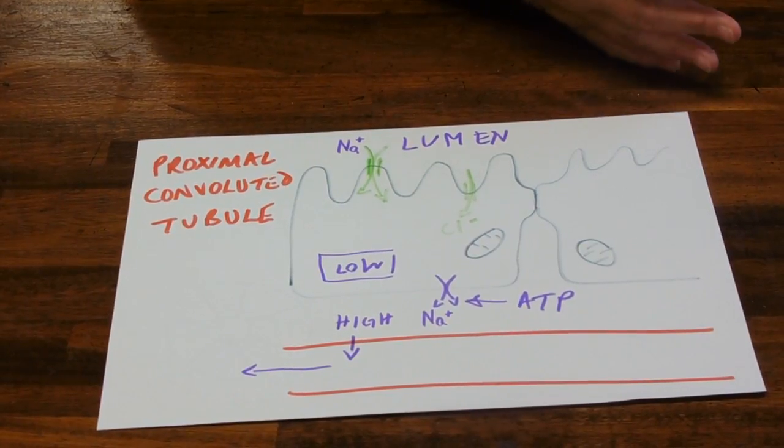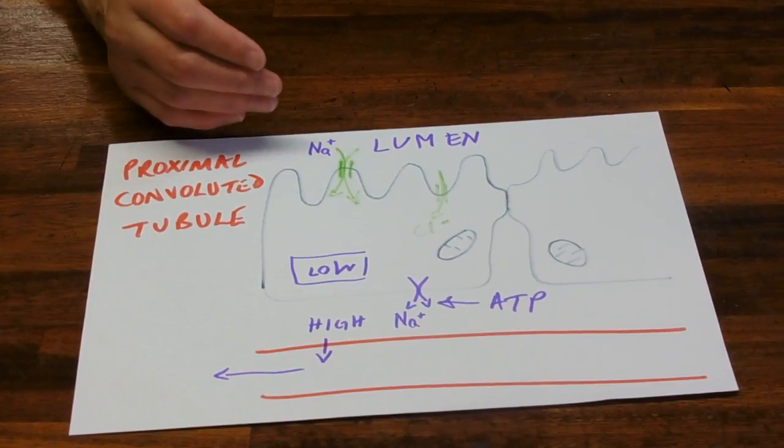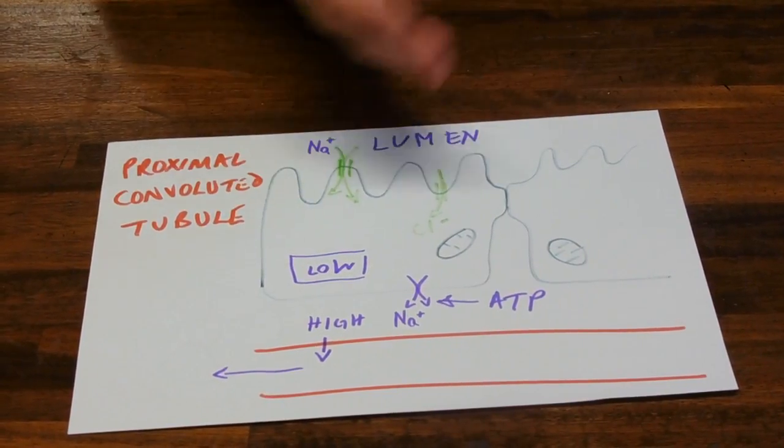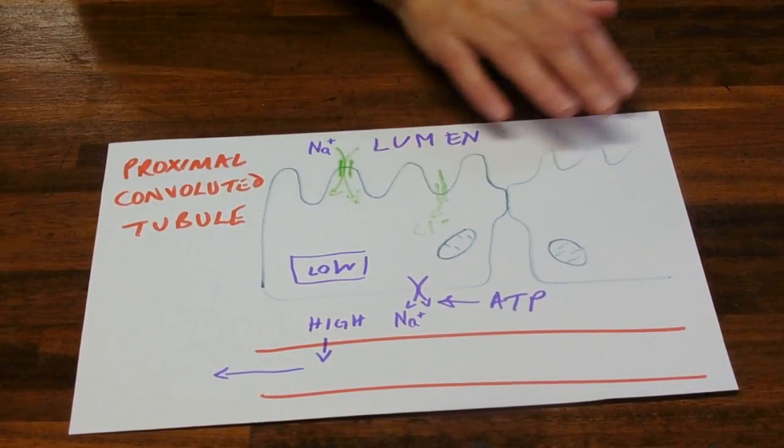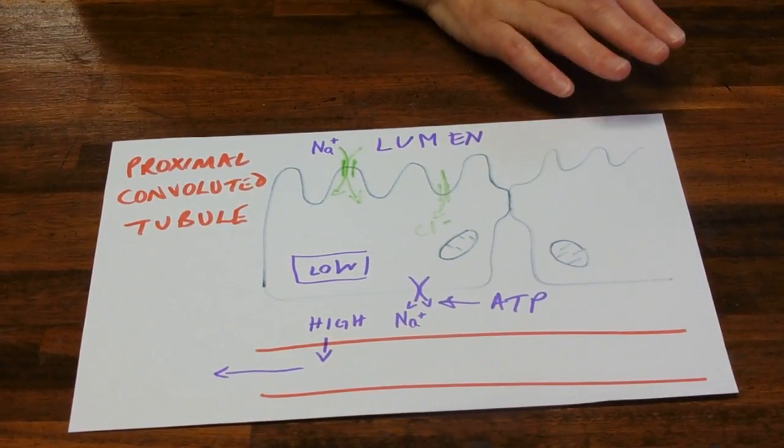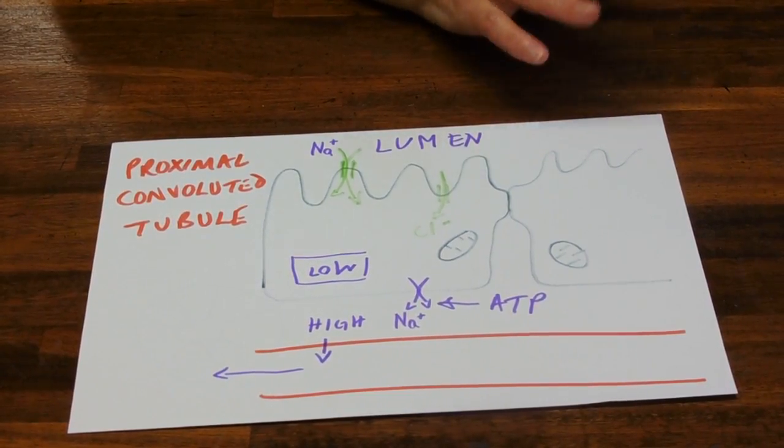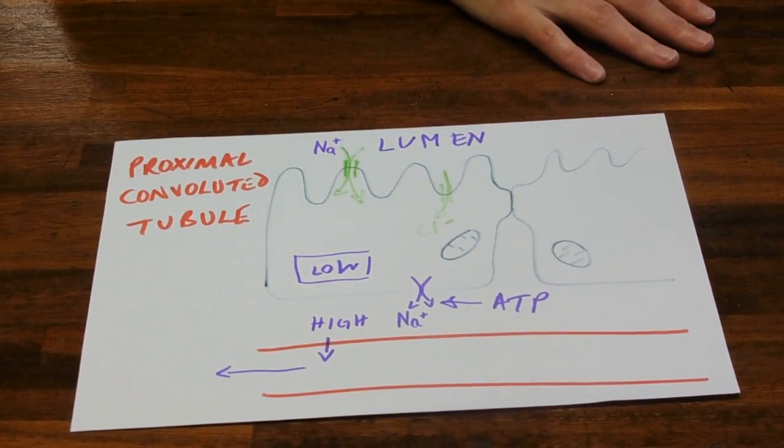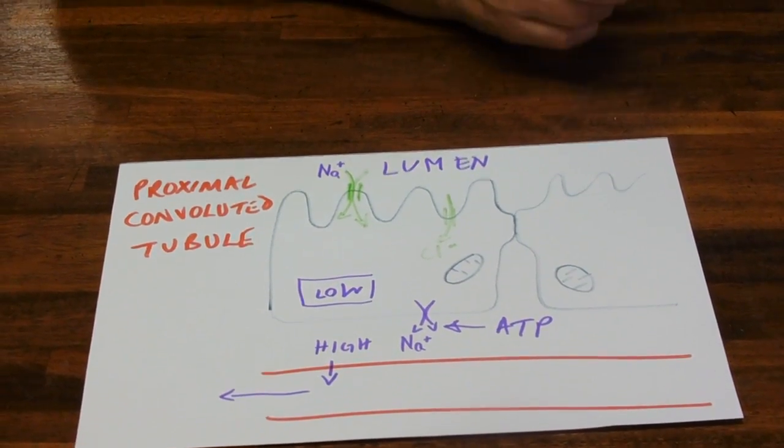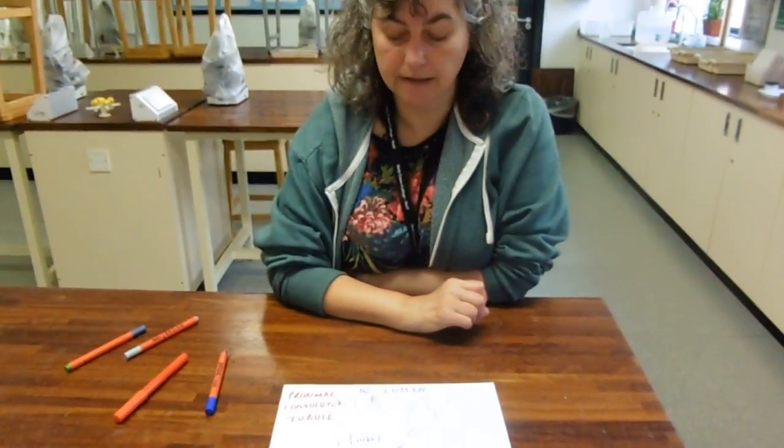We call that exceeding the renal threshold, so it just passes by all the channels, all the channels are full all the time, reabsorbing as much glucose as you possibly can, and there's still some left at the end. Because if there's no other place in the kidney that you can reabsorb that glucose, it will inevitably end up in the urine, hence giving you a positive glucose test of urine for untreated diabetics.